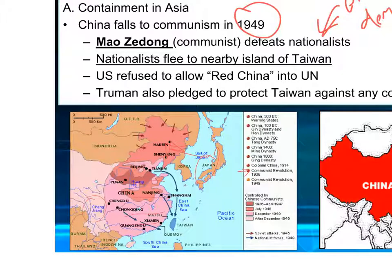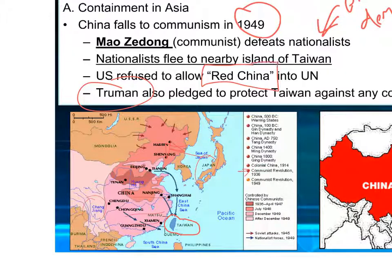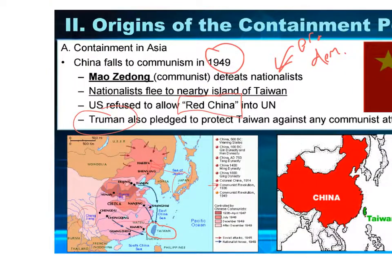Chang and the nationalists flee to Taiwan. If you're wondering why Mao didn't just go to Taiwan and finish them off — the United States enters the picture. Truman pledges to protect Taiwan against any communist attack and begins selling weapons immediately. So China can't attack Taiwan, though China insists Taiwan is part of them. When China tried to join the United Nations, Truman vetoes it as a founding member with veto power — pretty much shutting China out of the UN entirely. In 1949, China falls to communism — that's one-fourth of the world's population, just like that.